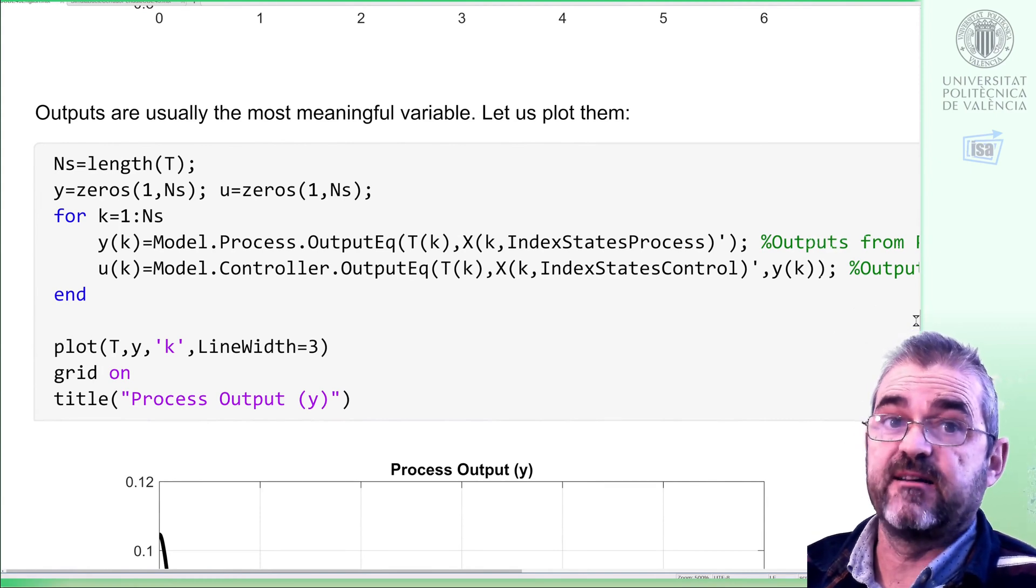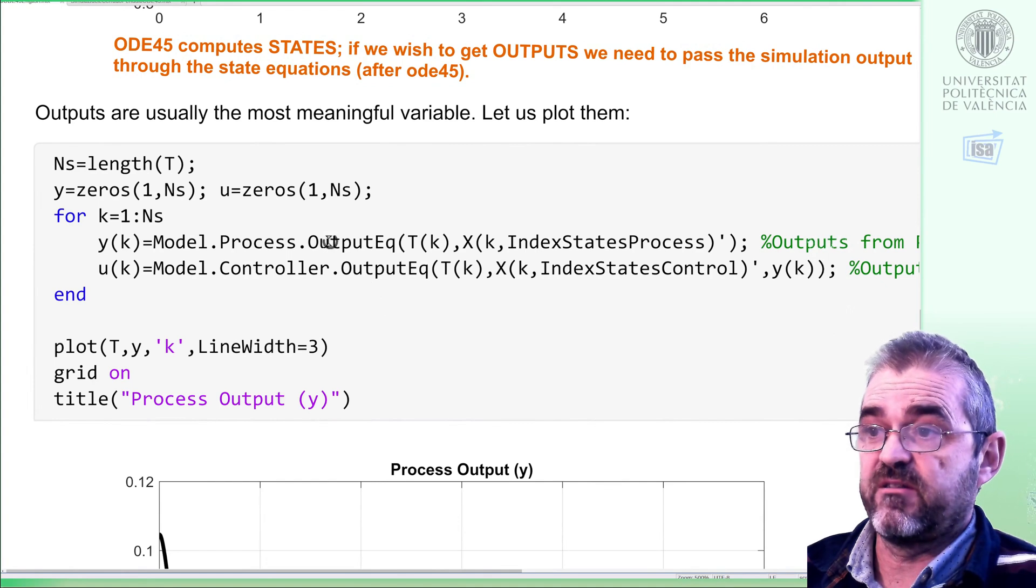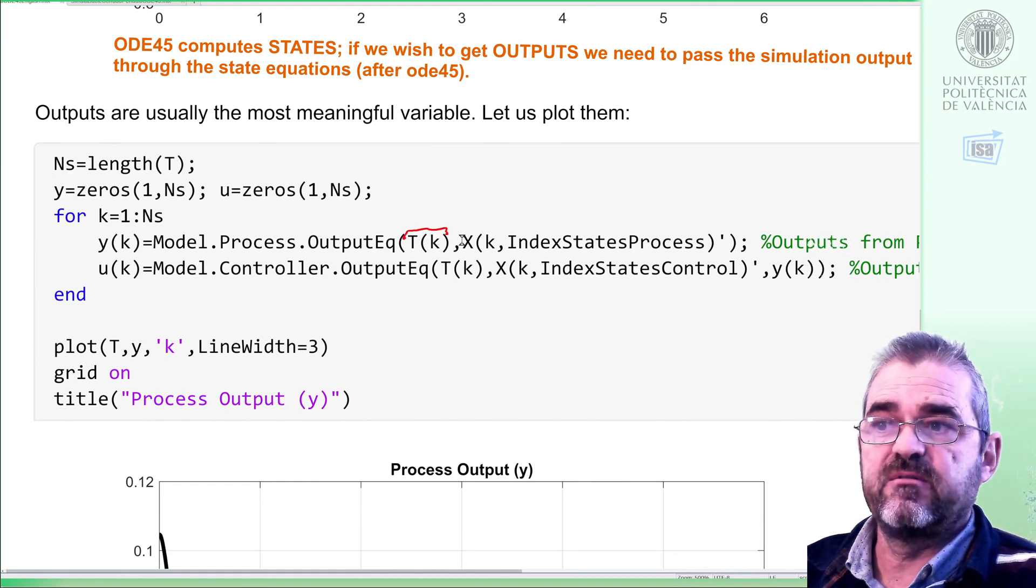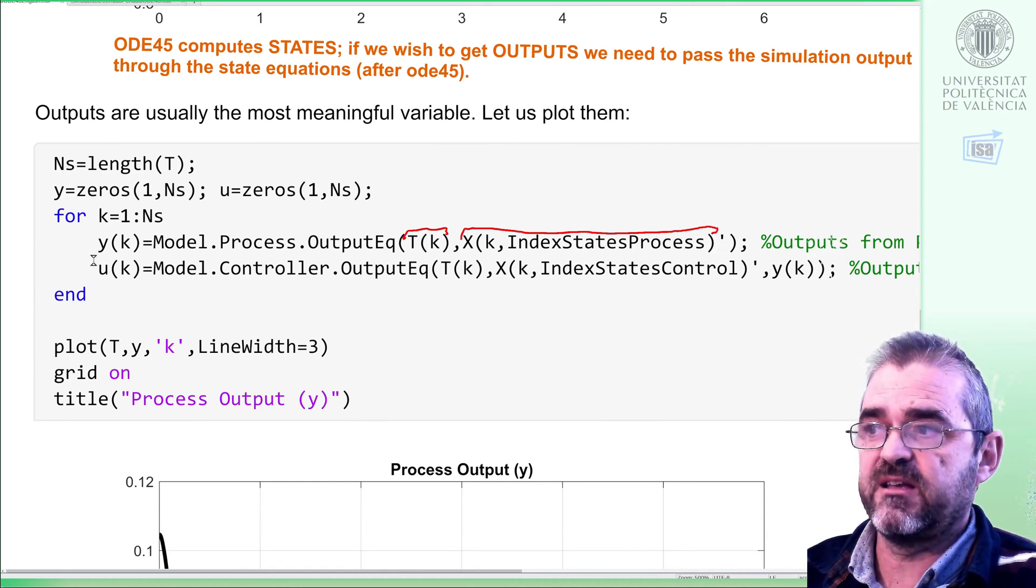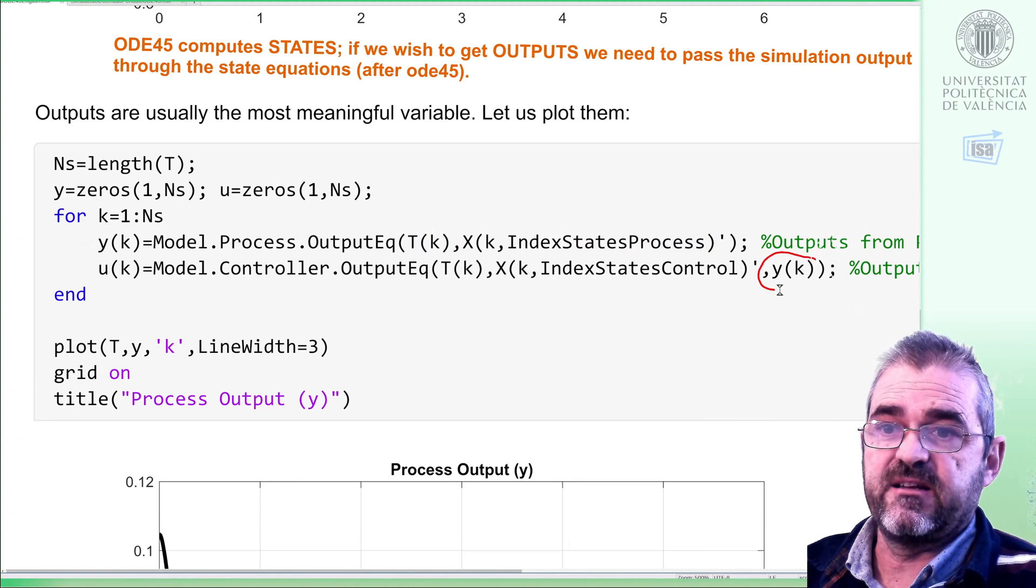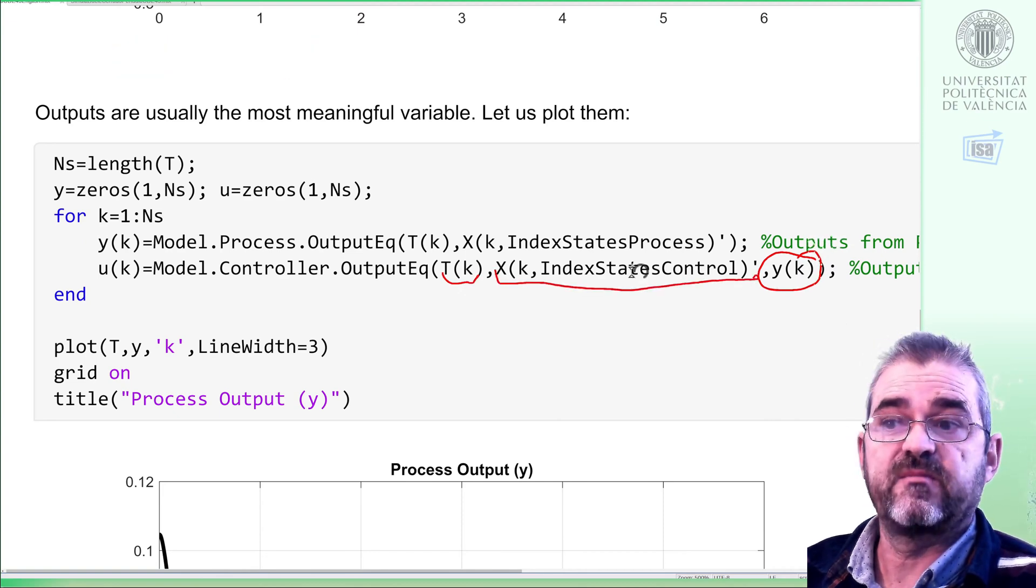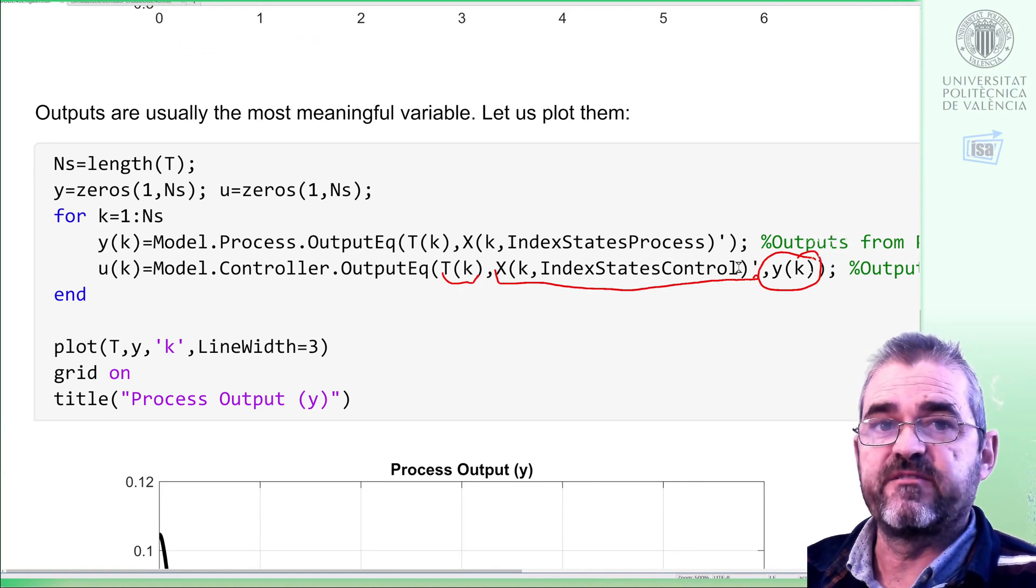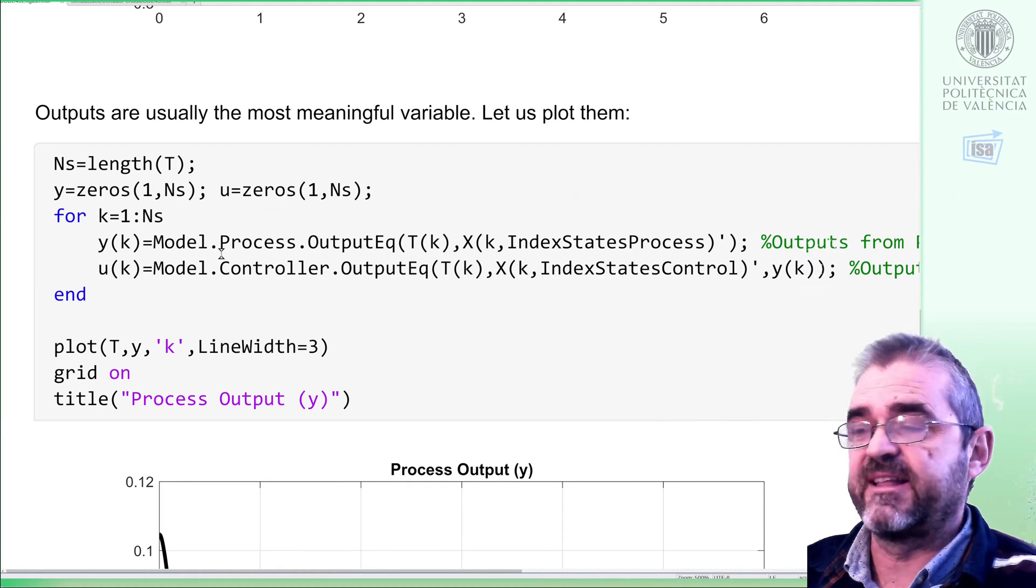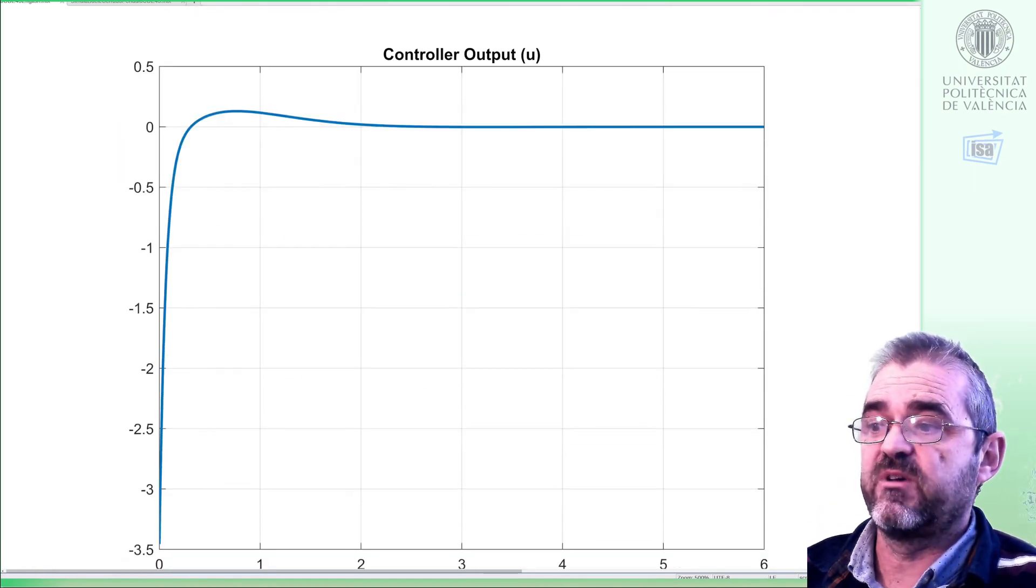Nevertheless, meaningful things are usually encoded as outputs. In this case, the process output—output position—and the controller output—the applied torque—can be obtained by evaluating the output equations. For each of the samples, I evaluate the output equation, giving to that equation the time of the sample and the process state of that sample. Then I get the output of the plant, the angular position. And if I feed that output of the plant as input to my controller, then the controller output equation has the arguments: the time of the sample, the controller state, the third column of x. I transpose because ODE45 gives me the states in rows, but these output equations assume that they have column form. So with all that, I get the control value, so I can plot the position, and with this other plot, here we have the control output.